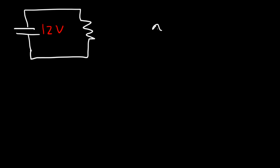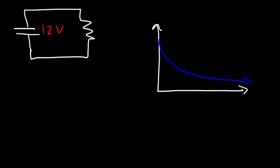Now let's talk about discharging a capacitor. If the capacitor is fully charged and we connect it across a resistor — say it has a voltage of 12 volts — the graph will start from its initial value of 12 and progressively decrease to zero. The equation that describes this graph is: V equals V-initial (the original voltage when T equals zero, which is 12 volts) times e raised to the negative T over RC.